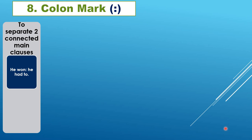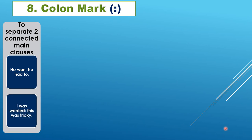More examples of colon: 'I was worried: this was tricky.' These are two connected sentences — instead of writing 'I was worried, because this was tricky,' you remove the comma and conjunction and use a colon. This shows the connection between the two sentences while keeping them in one.